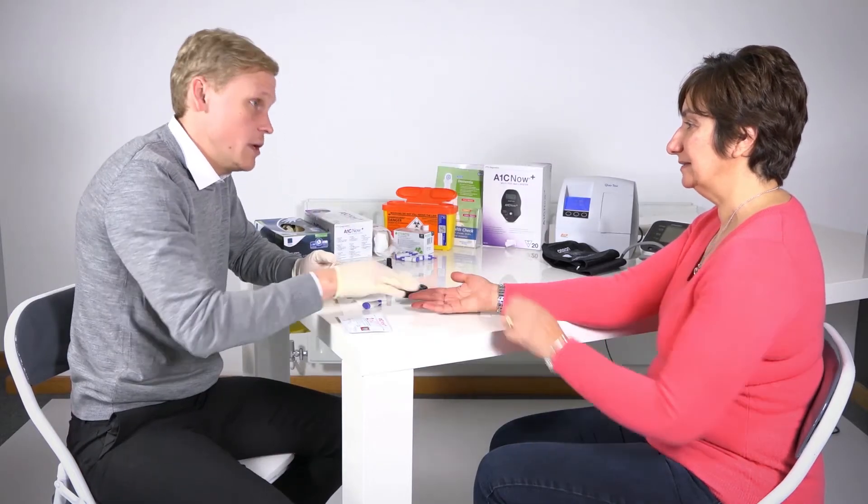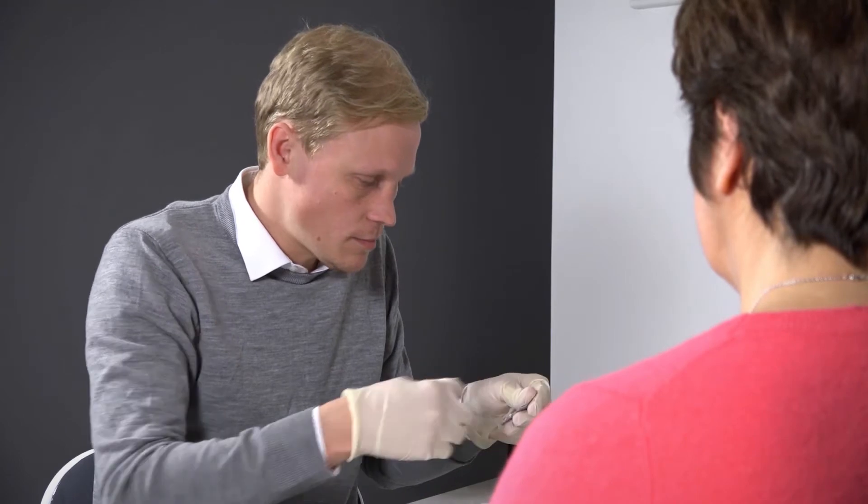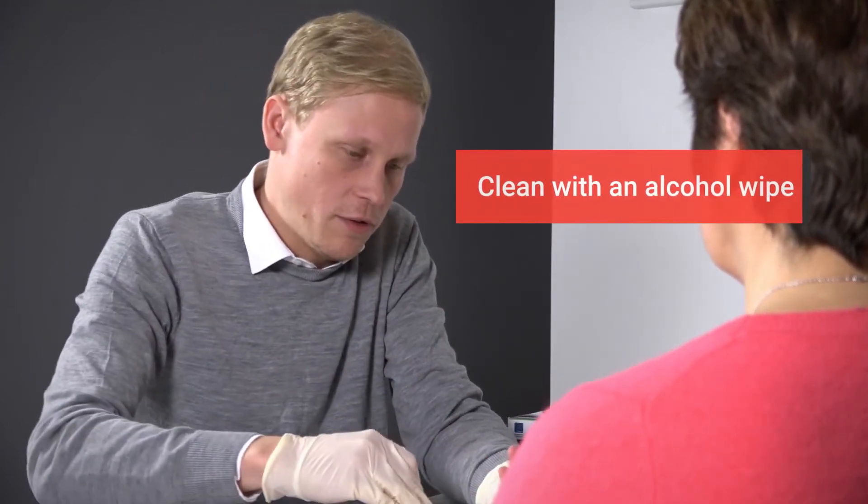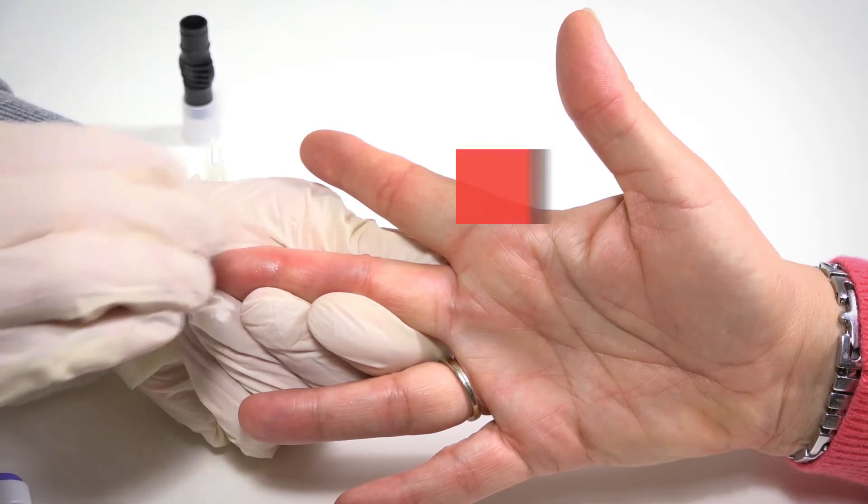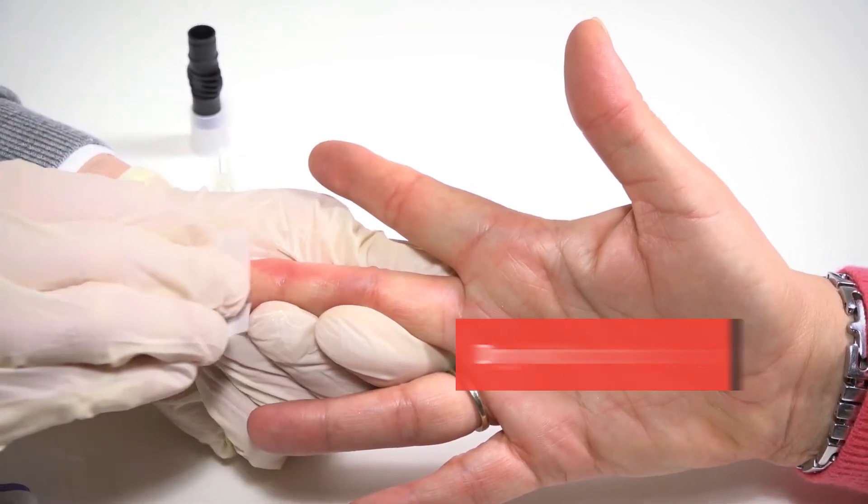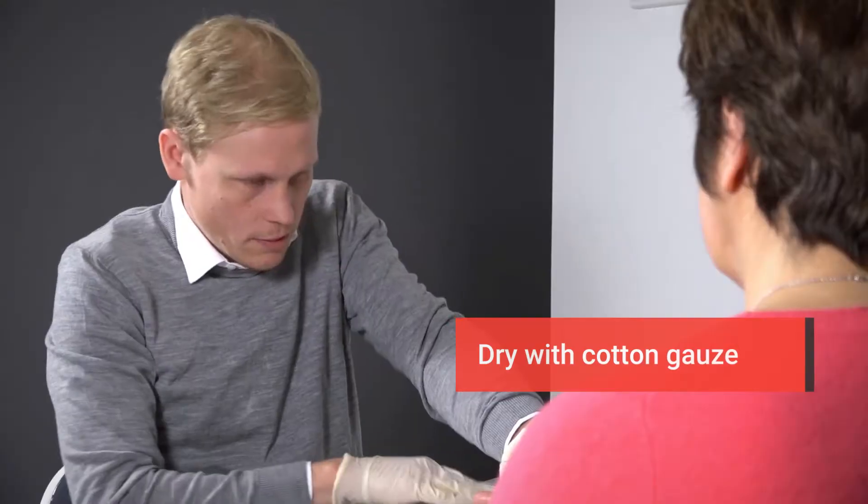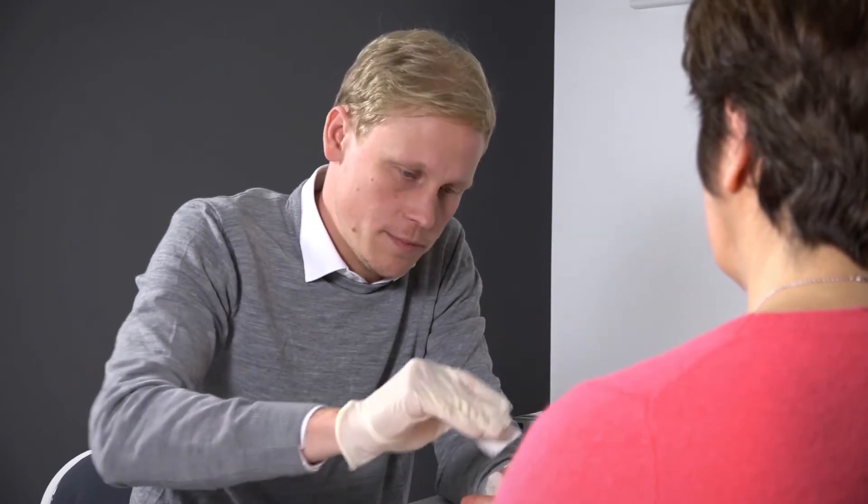Ask the patient which finger they would like the sample to be taken from. Ideally, this will be the middle finger on their non-dominant hand. Clean it with an alcohol wipe to remove any possible fats, grease or soap residues. Then dry the finger thoroughly with cotton gauze, as the alcohol could affect the accuracy of the results.